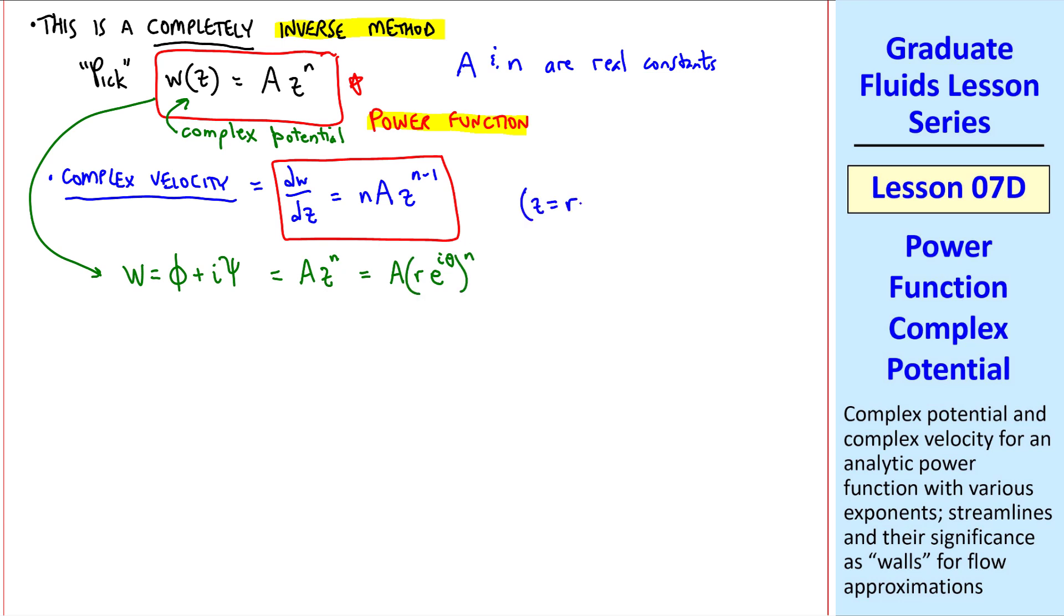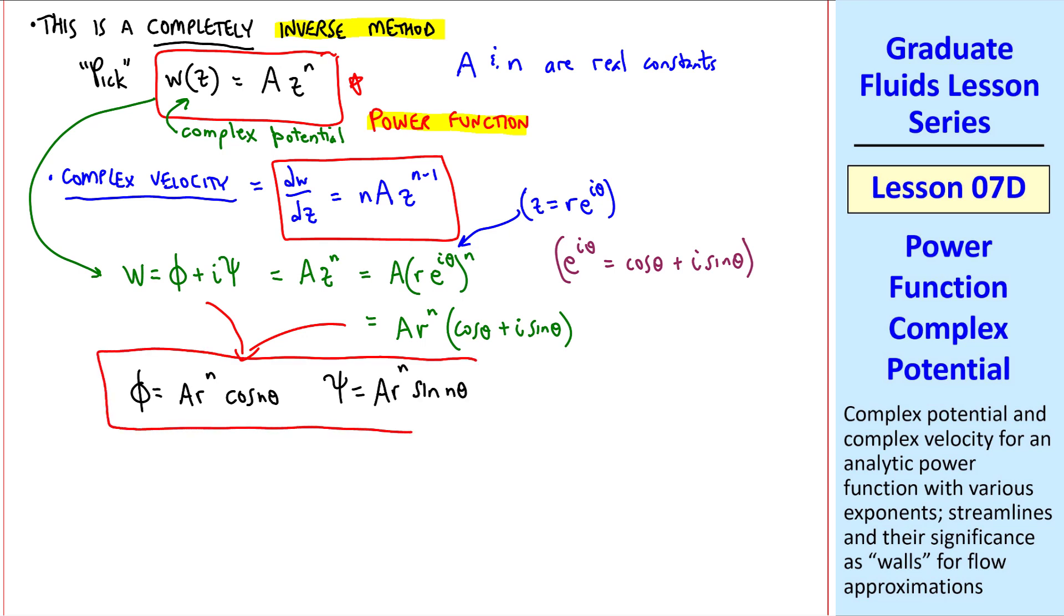Since z can be written as r e to the i theta. But also recall that e to the i theta equals cosine theta plus i sine theta. So we'll write this as a times r to the n times cosine n theta plus i sine n theta. Splitting up the real and imaginary parts, we see that phi is a r to the n cosine n theta, and psi equals a r to the n sine n theta. These are our potential and streamline equations.